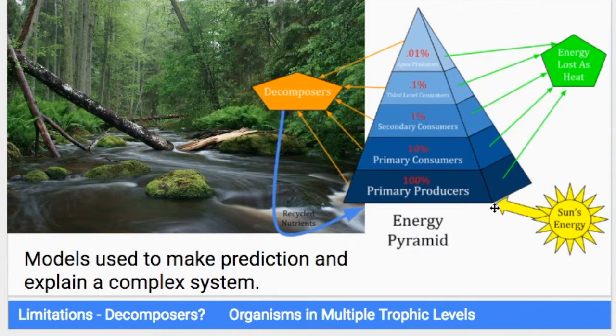At some times in my life, I eat a lot of plants, and so I would be a primary consumer. Occasionally, I eat some other animals, in which case I would be an omnivore. The models aren't perfectly clear, but you can get pretty close to being accurate.